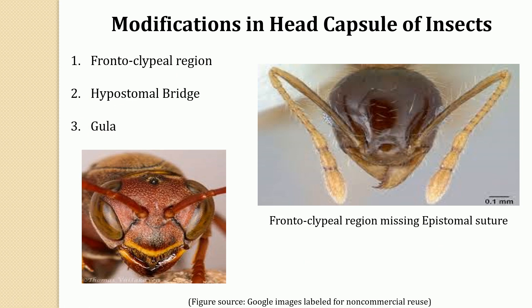The epistomal suture, also referred to as the clypeal-frontal suture, is wanting or absent in some insects such as cockroach. In this case, the clypeal region can be separated from the frontal region by the position of the anterior tentorial pits. In the diagram, this is the labrum and the clypeus; where the epistomal suture is completely absent, you have to identify the position of the anterior tentorial pit to demarcate the boundary of the clypeus from the frons.